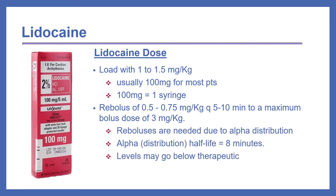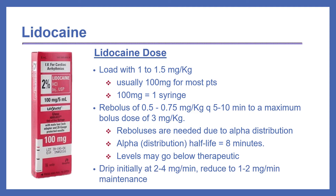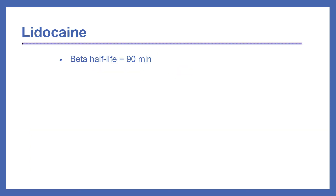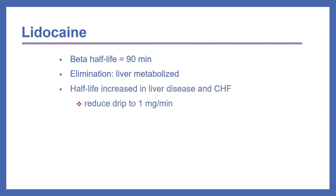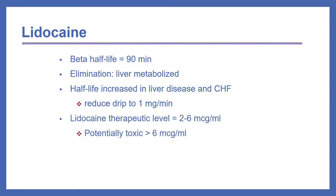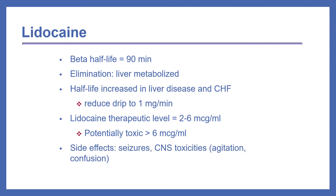Reboluses are needed because of alpha distribution — the alpha distribution half-life is 8 minutes, so levels may fall below therapeutic levels. We would then start a lidocaine drip initially at 2 to 4 mg per minute, then reduce to 1 to 2 mg per minute for maintenance. The beta half-life of lidocaine is 90 minutes, and elimination is through liver metabolism. The half-life can be increased in liver disease and CHF, so in these cases we need to reduce the drip to 1 mg per minute. The therapeutic level is 2 to 6 mcg per mL, and it is potentially toxic above 6 mcg per mL. Side effects include seizures and CNS toxicities such as agitation and confusion.